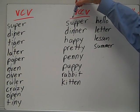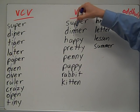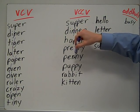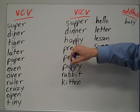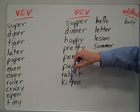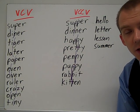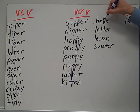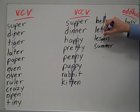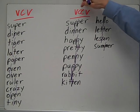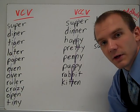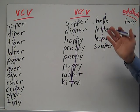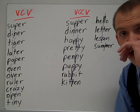Now here we have our short vowel sounds. So you have supper, dinner, happy, pretty — short E — penny, puppy, rabbit, kitten. Notice I draw a line to separate all your junctures, so there are two syllables in every one of these words. Hello, letter, lesson, summer — these are also VCCV. Look in the middle: you have two consecutive consonants. They don't have to be the same. All of these are doubles, but they don't have to be the same — keep that in mind. If you go back and look at compound words or something like that, that definitely has junctures that don't have the same consonant twice.